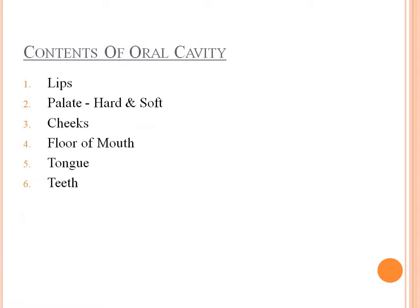The contents of the oral cavity include the lips anteriorly, the palate — hard and soft — on the roof, the cheeks laterally, the floor of the mouth, tongue, and teeth.